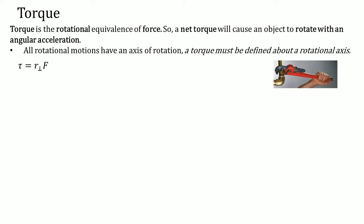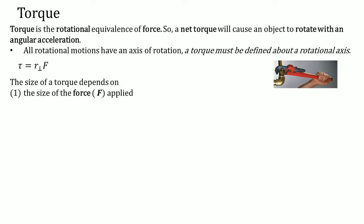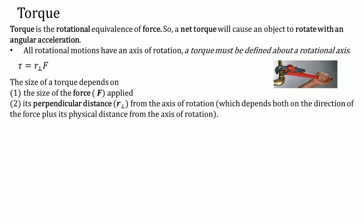The equation for torque uses the symbol tau — in Greek we call it rho. That equals R perpendicular times force, where R stands for the radius and F stands for the force. The size of the torque depends on two things: one, the size of the force F that is applied; and two, the perpendicular distance R perpendicular from the axis of rotation, which depends both on the direction of the force plus its physical distance from the axis of rotation.